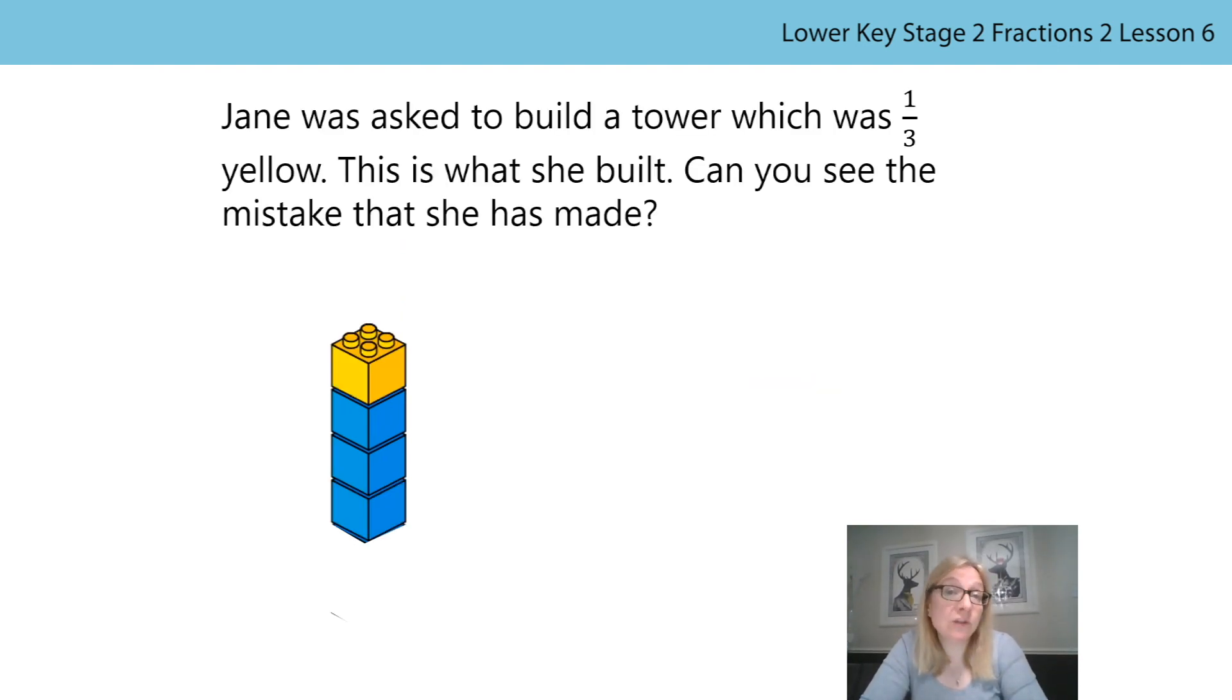Jane was asked to build a tower which was one-third yellow, and this is what she built. Can you see the mistake that she has made, and what would she need to do to correct it? Pause the video if you need to, and perhaps have a chat with someone else in your house. Did you work out Jane's error?